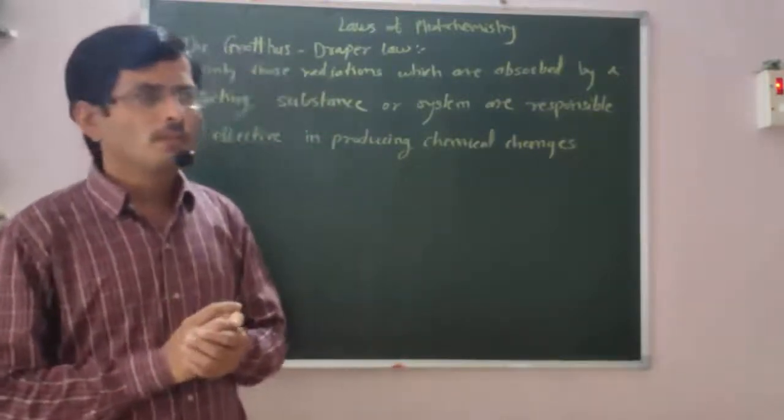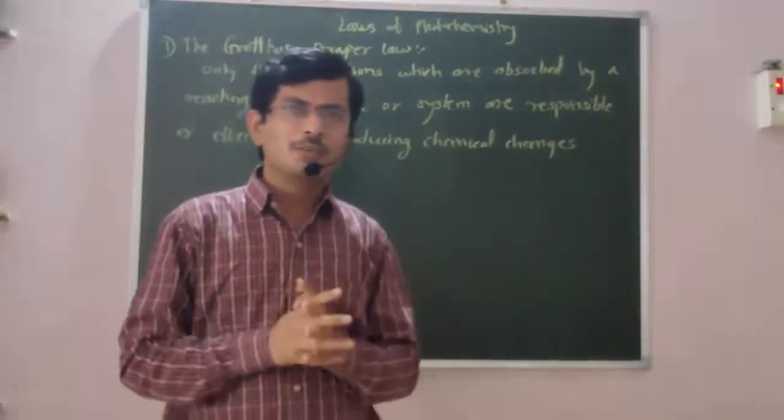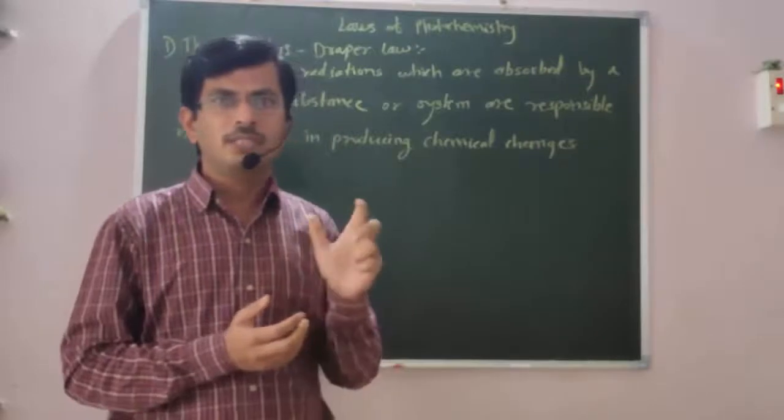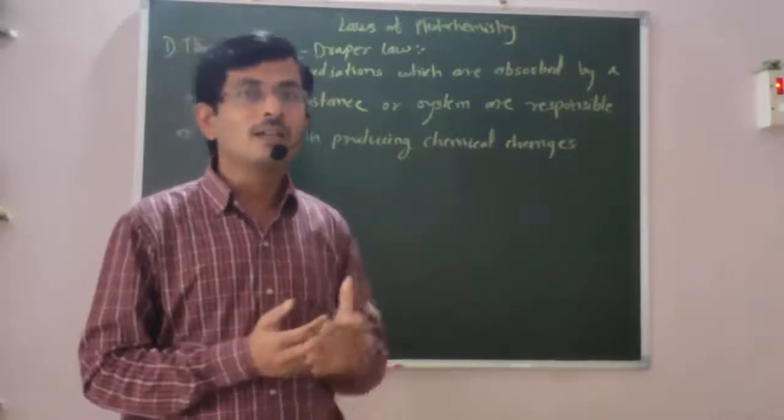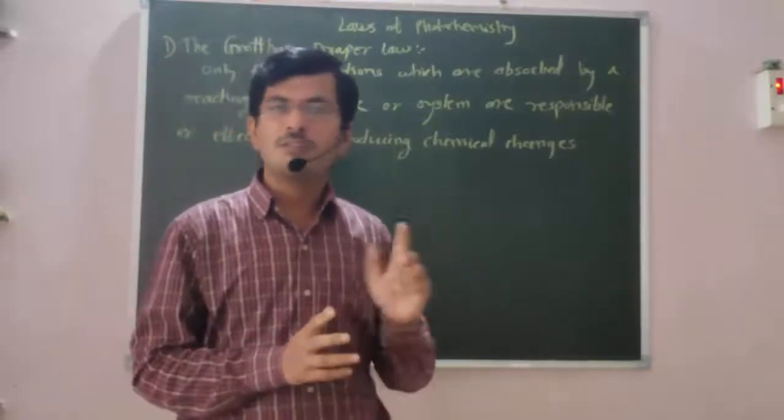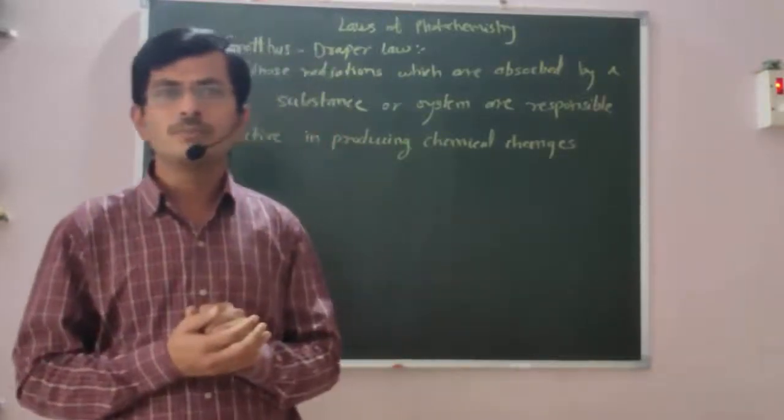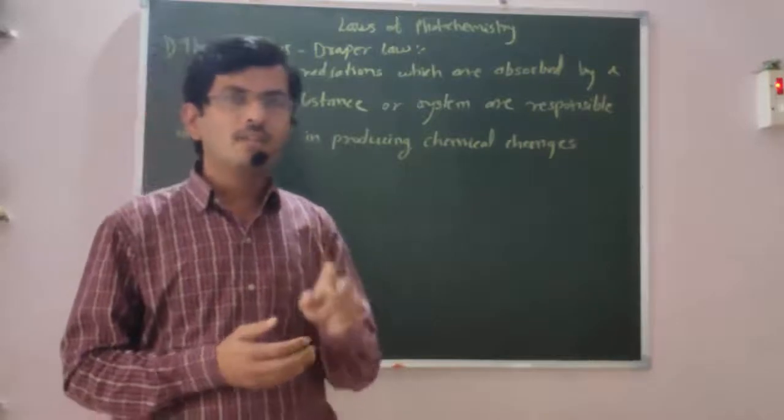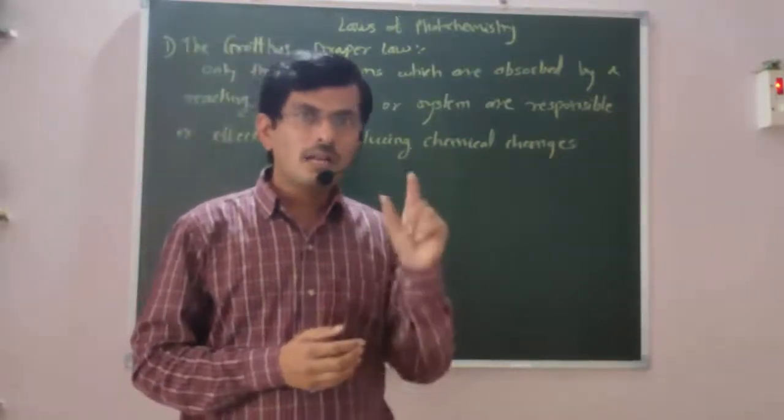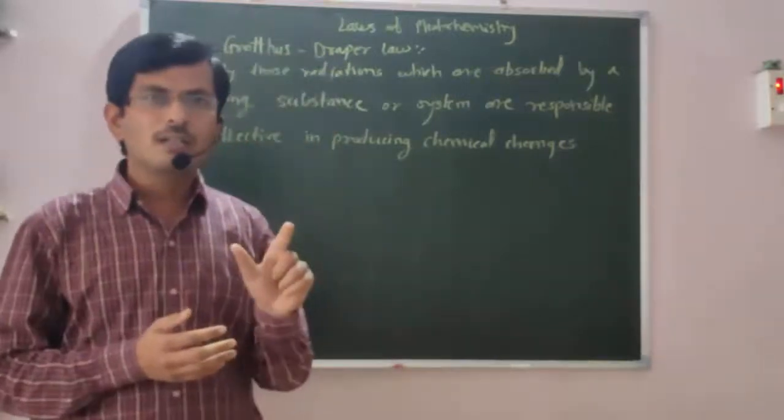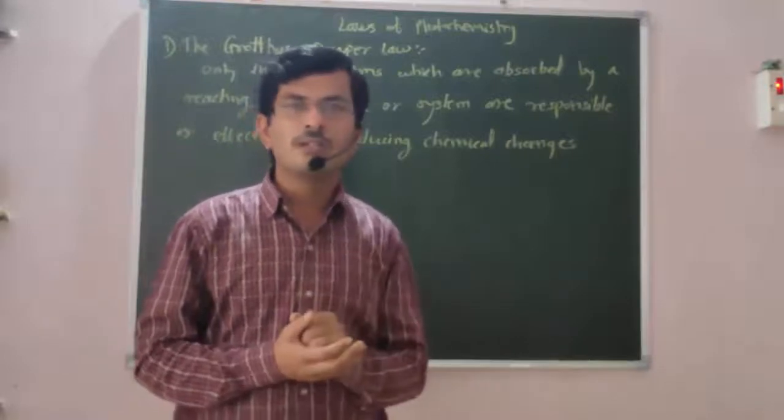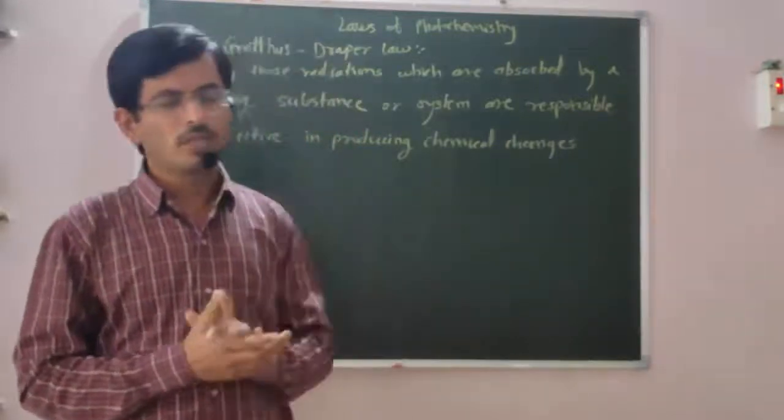For example, in our homes we have colored clothes, dark colored clothes. When we dry them in direct sunlight, what happens? If the dark colored cloth is kept in direct sunlight for a long time, the dark color starts to fade.